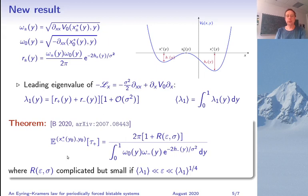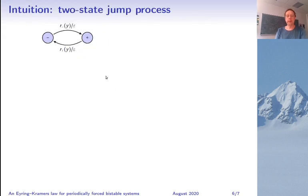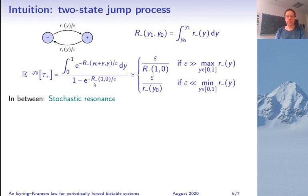Now let me give you some intuition on why this result should be true. It is expected that the process can be approximated by a two-state Markov jump process with transition weight r₋ and r₊ over epsilon. For this system you can explicitly compute the expectation of the transition time. It's given by this formula here where we use periodicity of the system in y.